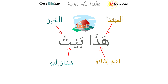We have to take note: a nominal sentence will need two core elements or two parts to complete the sentence. It will need a subject — مبتدأ — and it will need a predicate — خبر.